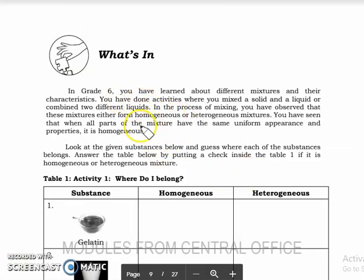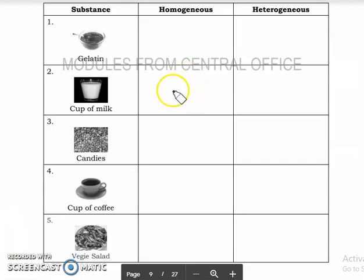So let's proceed to this next discussion. In grade 6 you have learned about different mixtures and their characteristics like homogeneous mixtures and heterogeneous ones. For a sort of recall, let's answer this for gelatine. So let's just check on the correct answer. Gelatine, it's homogeneous. And for the cup of milk, still homogeneous if stirred well. For the candies, it's very obvious, it's heterogeneous. For the cup of coffee, again, if you stir it well, that the sugar will dissolve in the cup of coffee, then that's homogeneous. Veggie salad, it's heterogeneous.